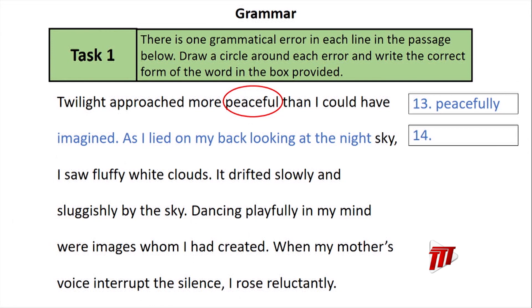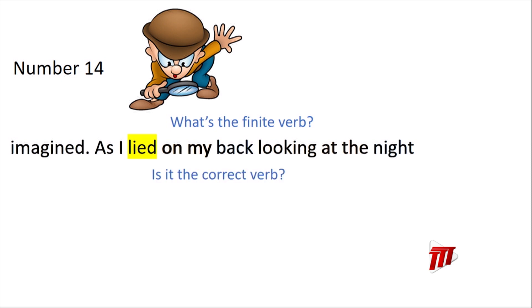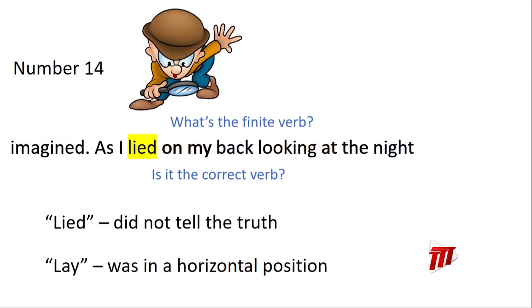Number 14: 'As I lied on my back, looking at the night sky.' The finite verb is 'lied,' but 'lied' means did not tell the truth. 'Lay' means was in a horizontal position. So the correct answer is 'lay' — as I lay on my back.